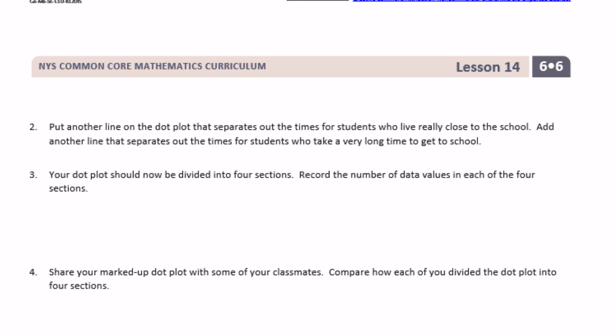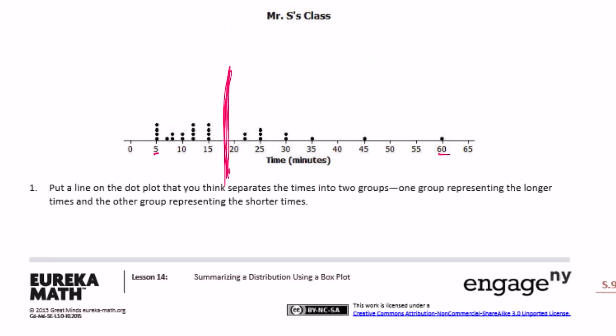Number two, put another line in the dot plot that separates out the times for students who live really close to school. And another line that separates the students that take a very long time to get to school. So now I'm going to do two more. One for this side. So finding a middle of the one that takes a long time or a short time. Go right there. And one that separates the people who take a long time to get to school. So that one's going to be more like maybe here. Again, not a right or wrong answer. You're just estimating. So those are going to represent my different quartiles. Quartile one and quartile three.